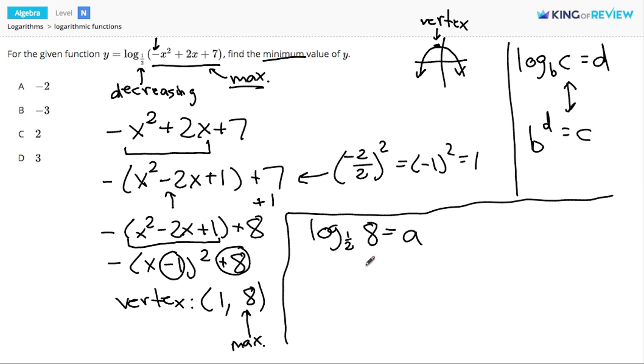So we can change our expression into 1 half to the a power is equal to 8. Now I have a 2 in this 1 half, and I know that 2 to the 3rd power is equal to 8. So let's change 1 half into 2 to the negative 1 power. Negative 1 power is the same as taking the reciprocal, and now I have a power of 2.